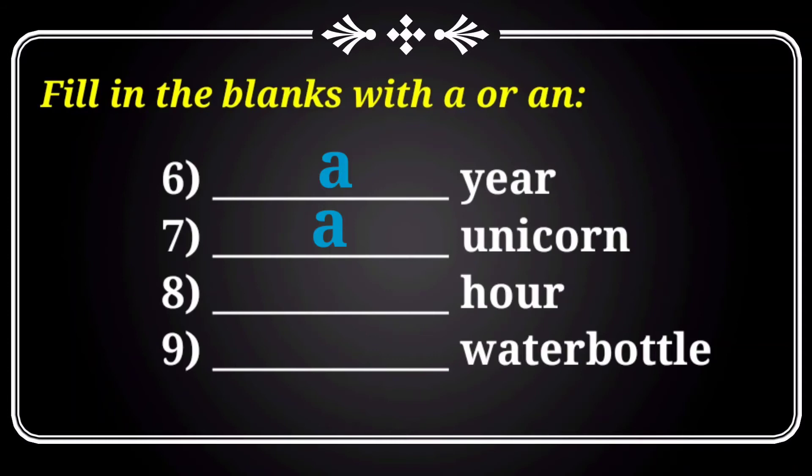Look at the eighth one: blank — hover. We use 'an' only for the vowel sounds a, e, i, o, u. Here, the word has a muted 'h' sound — the 'h' is silent, so it changes into 'aver'. It comes under a vowel sound. So you have to use 'an hover'.